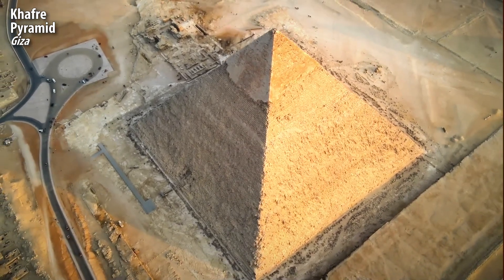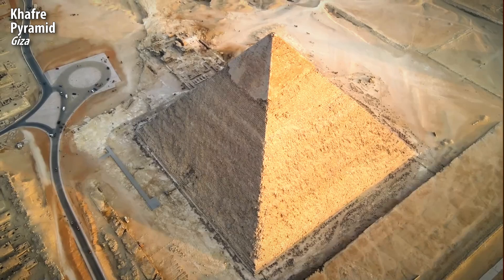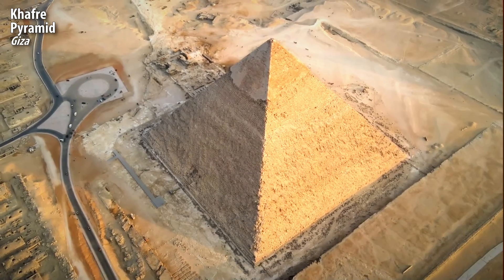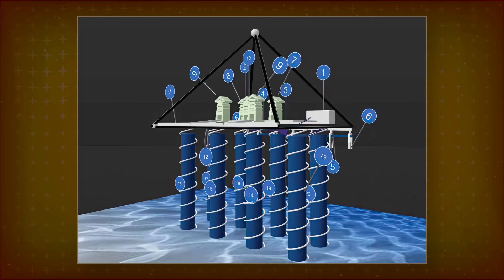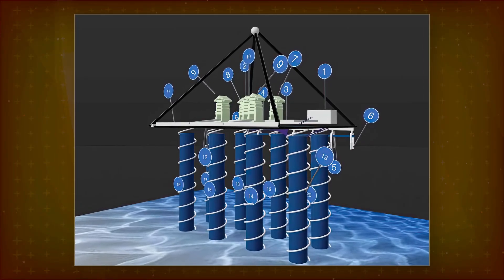Recently, an Italian team made claims that radar data from satellites can see deep under the Earth's surface. The team says they see 600-meter-tall pylons under the Khafre Pyramid in Giza.